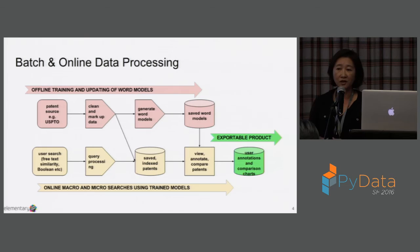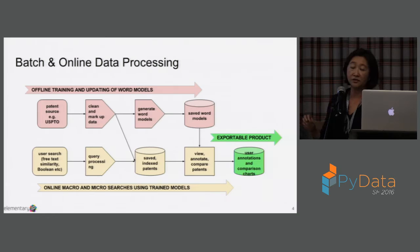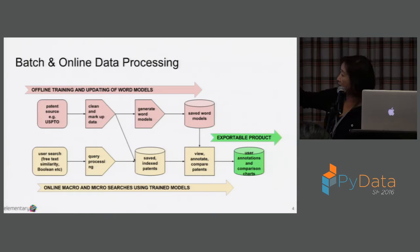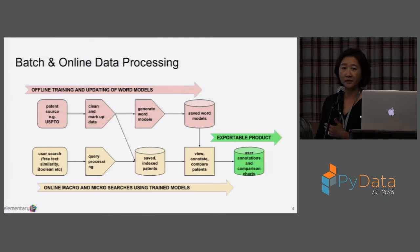Our application consists of two parts. What's behind the macro and micro-searching is word models. We train our word models by processing billions of terms in hundreds of millions of patents. Those two searches are based on the word models we created using machine learning algorithms. The pink processing in the diagram is the back-end processing — there's a lot of document crunching and data processing. That is the offline batch processing. We can't really do that real-time because there's so much data.